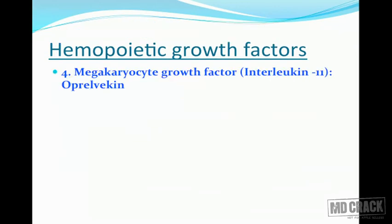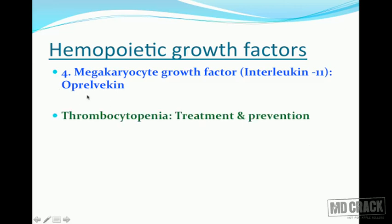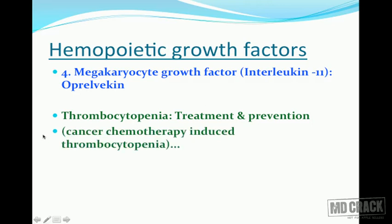The next hematopoietic growth factor is megakaryocyte growth factor — interleukin-11, also called oprelvekin. It is useful in the treatment and prevention of thrombocytopenia, including cancer chemotherapy-induced thrombocytopenia. These growth factors have specific indications, which are useful for multiple choice questions.